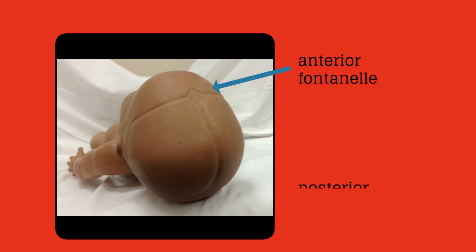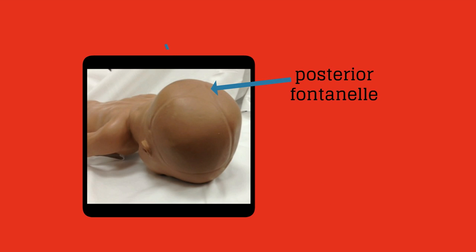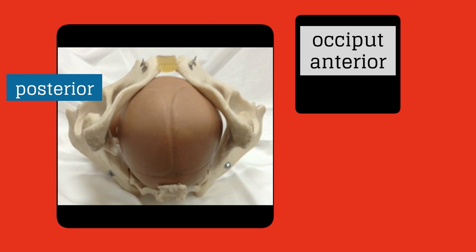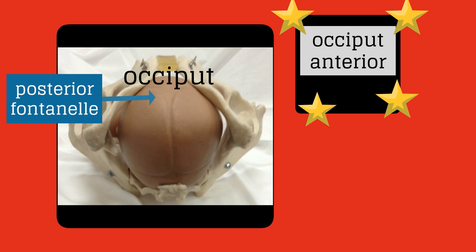On vaginal examination, the diamond shaped anterior fontanelle and the triangular shaped posterior fontanelle can be palpated as well as the sagittal suture. This photo has a better view of the triangular shaped posterior fontanelle. We describe the fetal position in relationship to the fetal occiput and the maternal body. Here is a fetus in the occiput anterior position. Here is the posterior fontanelle and the occiput is on the anterior part of the maternal body. This is the optimal position for delivery for this has the smallest diameter that has to pass through the pelvis.